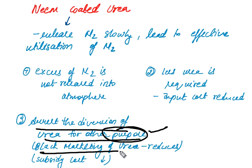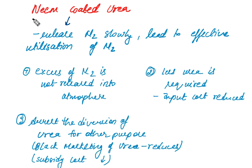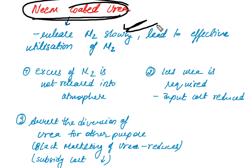And then it arrests the diversion of urea for other purposes. Black marketing of urea is reduced, and government subsidy burden is reduced. So these are the advantages of using neem coated urea.